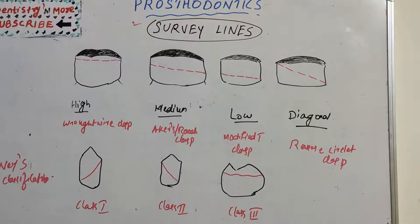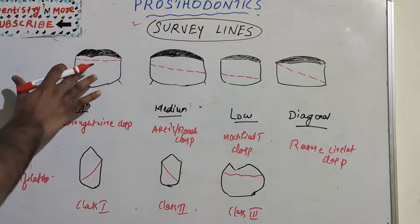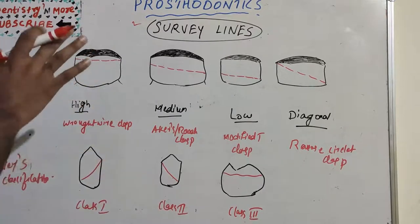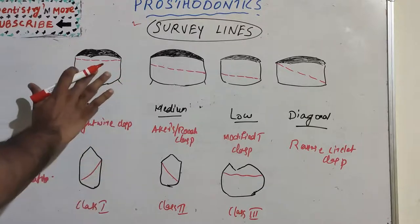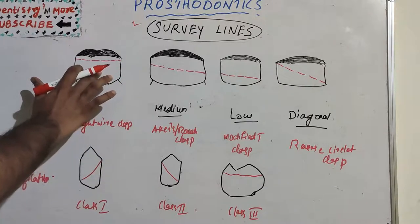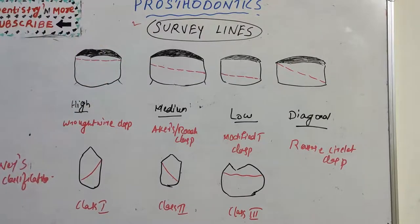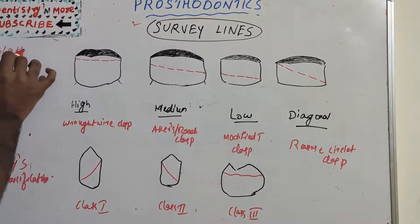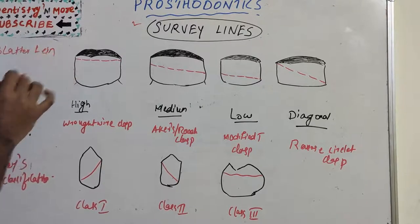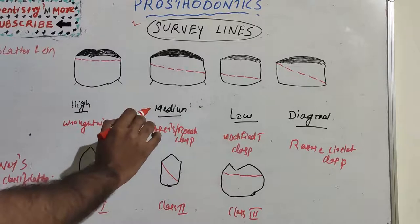When we are doing denture fabrication, we need to attach a clasp to the prosthesis. Where exactly the clasp is to be kept depends upon the angulation and orientation of the tooth. To determine the position of the clasp, a surveyor is used, and that particular line or imaginary line is known as a survey line. We have basically four types of survey lines, as classified by Blatterfinn: high survey line, medium survey line, low survey line, and diagonal survey line.